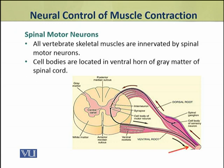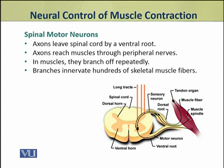In spinal motor neurons, the cell bodies are located in the ventral horn of the grey matter of the spinal cord. The axons of these spinal motor neurons leave through the ventral root and reach muscles through peripheral nerves.